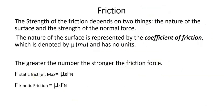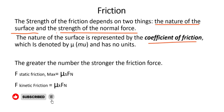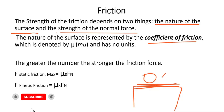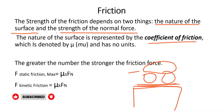The strength of friction depends on two things: one, the nature of the surface; and two, the strength of the normal force. The nature of the surface is represented by the coefficient of friction. With the diagram, the snow between the car tires and the ground is the coefficient of friction, denoted as μ (mu).